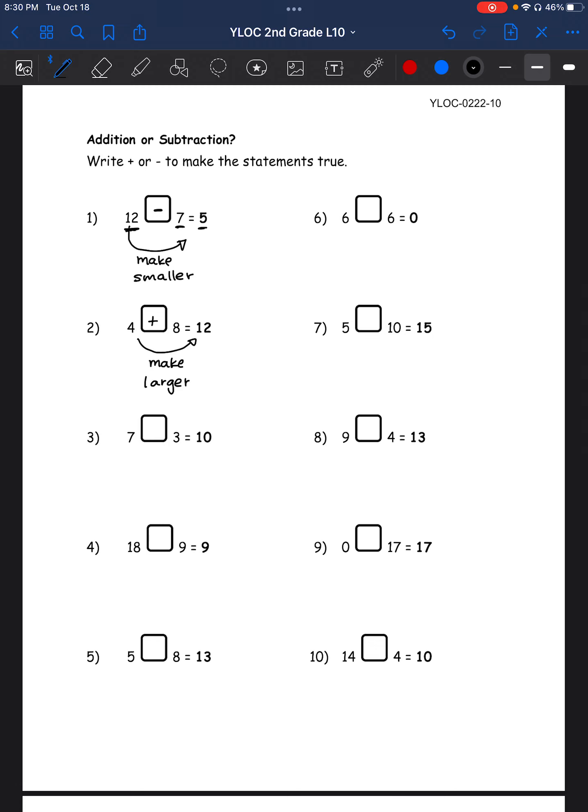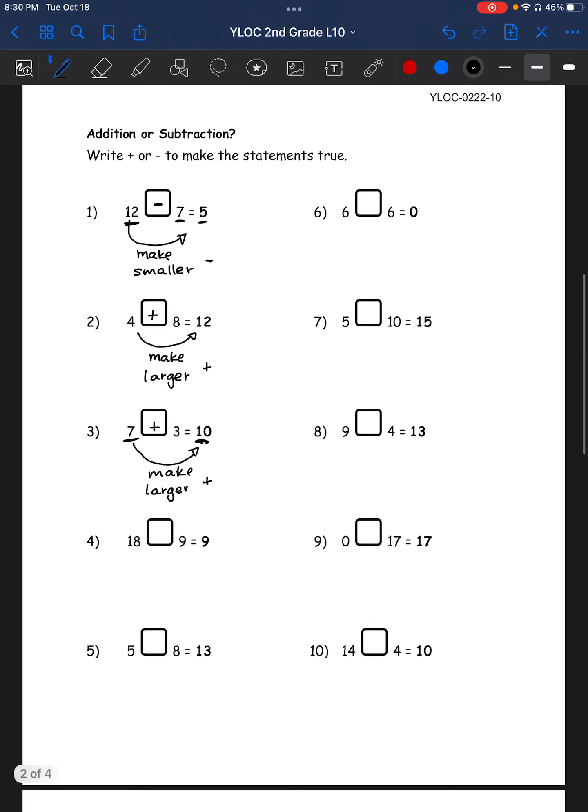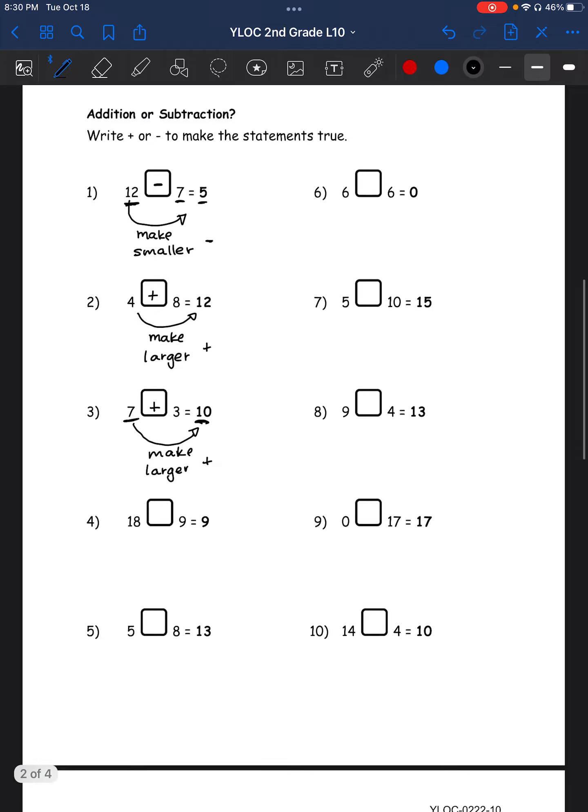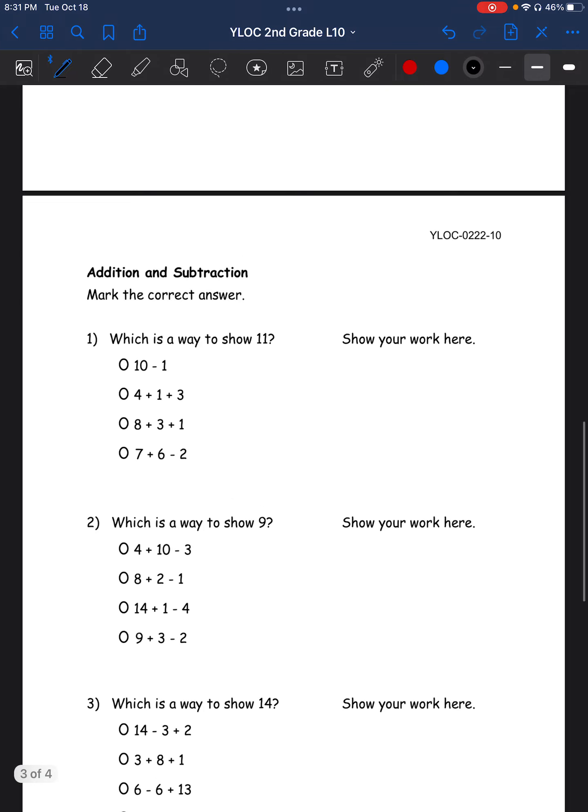Let's do one more. 7 and 10. 10 is larger than 7, so we have to make it larger. In order to make it larger, that's a plus equation. Plus. Making it smaller is a minus equation. 7 plus 3 equals 10. Alright, so do the rest of these problems and let's move on.